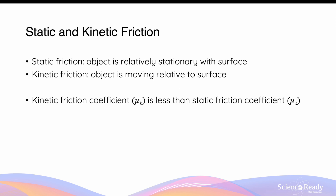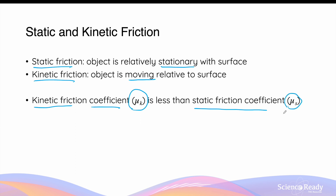There are two types of frictional forces: static friction and kinetic friction. Static friction acts on an object when it is relatively stationary — that is, at rest — with respect to the surface. In contrast, kinetic friction acts on an object when it is moving relative to the surface. In general, when the type of surface remains the same, the kinetic friction coefficient (mu_k) is less than the static friction coefficient (mu_s). Before performing calculations, it is important to identify whether there is static friction — the object is at rest — or kinetic friction — the object is moving relative to the surface.